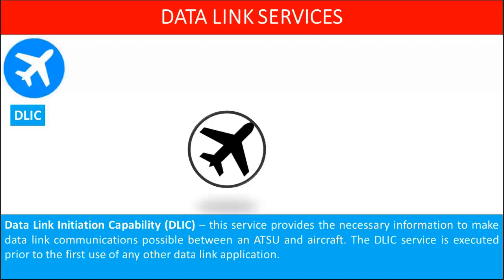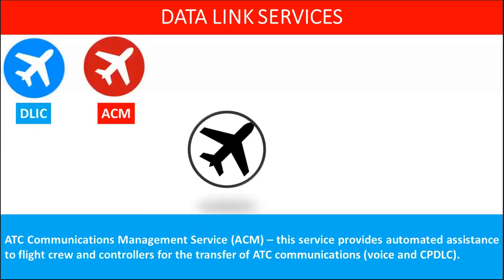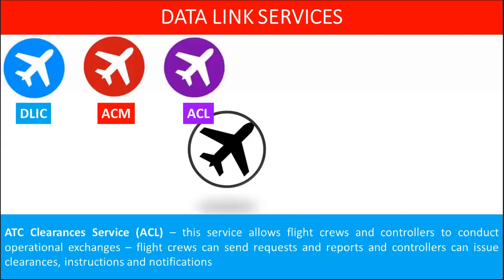Data link services of CPDLC include: Data Link Initiation Capability (DLIC), which provides the necessary information to make data link communications possible between an ATSU and aircraft, and is executed prior to the first use of any other data link application. ATC Communications Management service provides automated assistance to flight crew and controllers for the transfer of ATC communications via voice and CPDLC. ATC Clearances service allows flight crews and controllers to conduct operational exchanges; flight crews can send requests and reports, and controllers can issue clearances, instructions, and notifications.